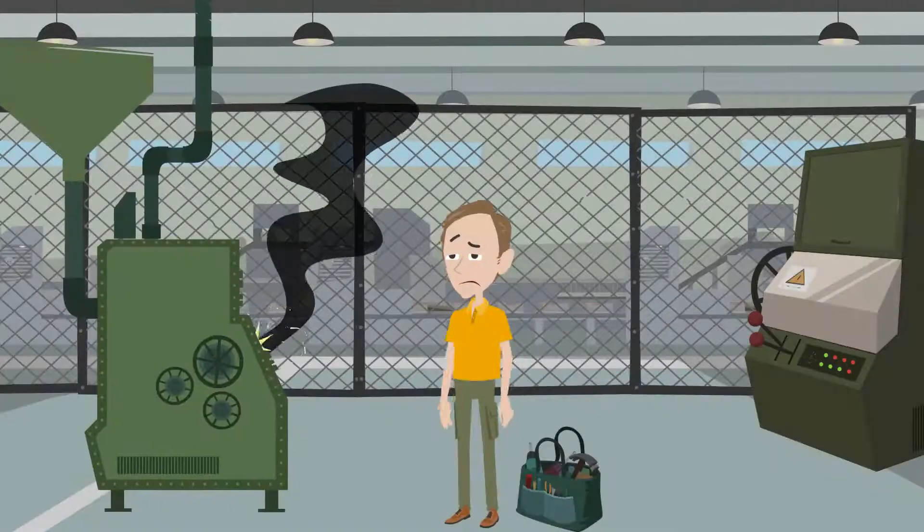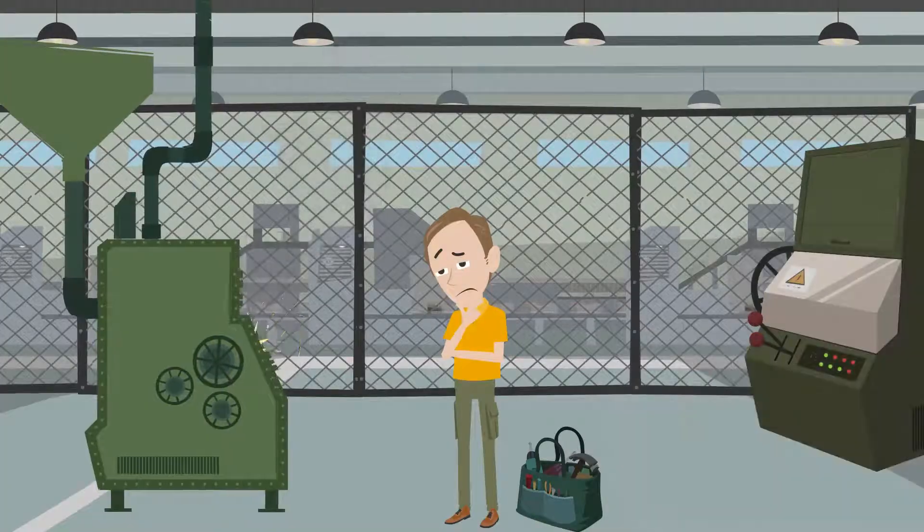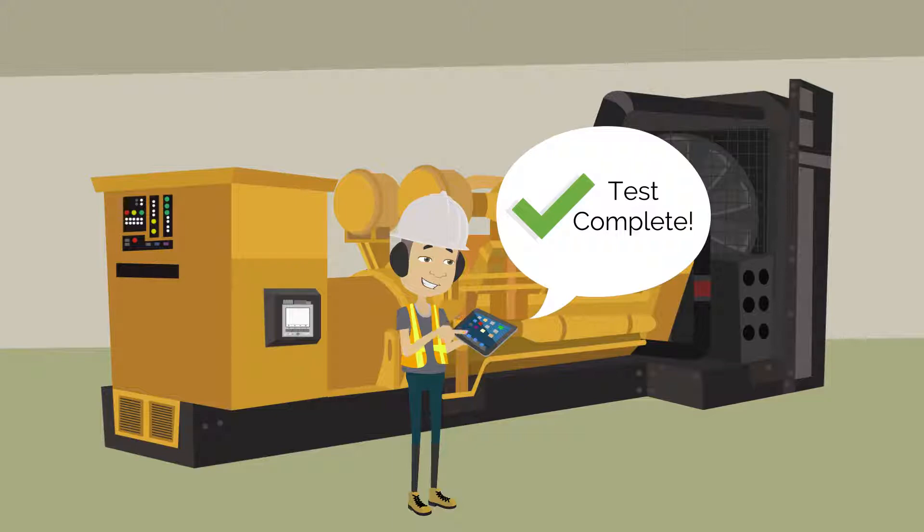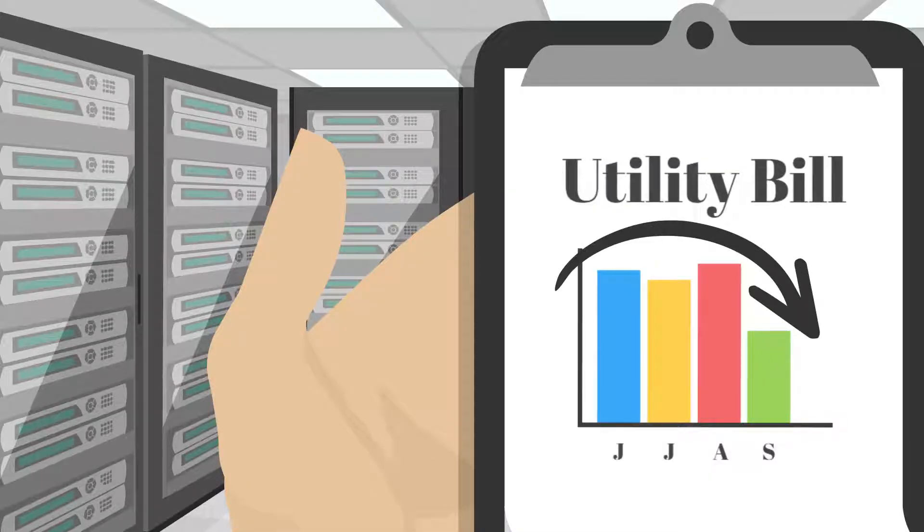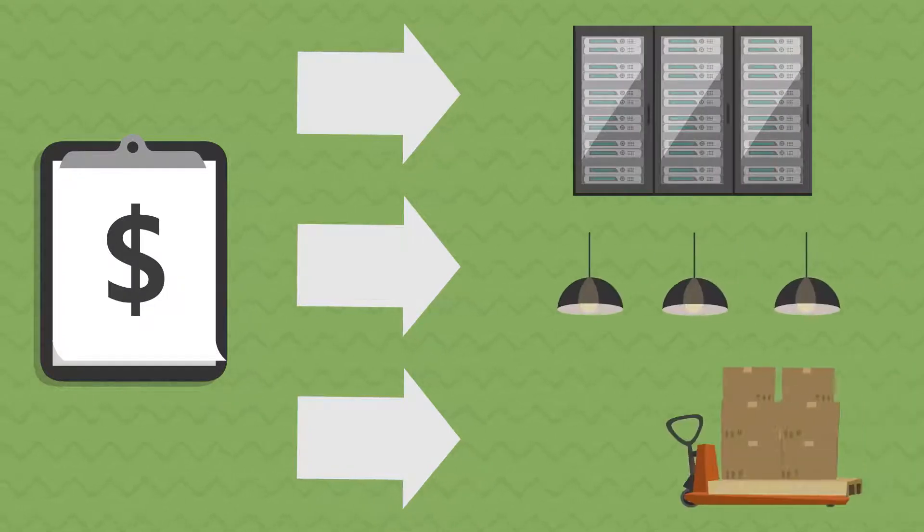Locate and troubleshoot power quality issues damaging electronic equipment or causing light flickering. Automate monthly healthcare generator and automatic transfer switch testing. Reduce peak demand charges by measuring and analyzing energy use. Allocate energy costs to building tenants or departments.